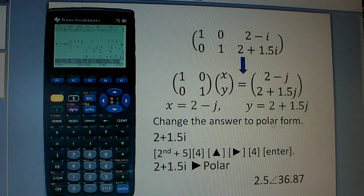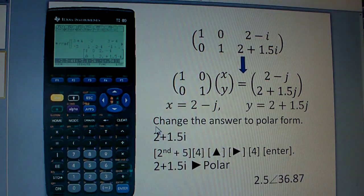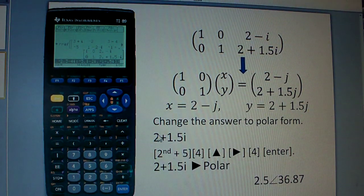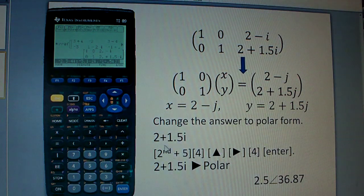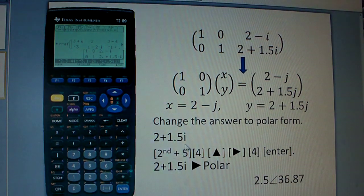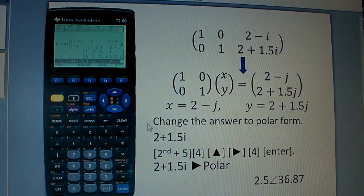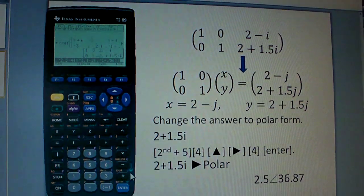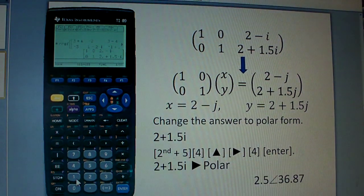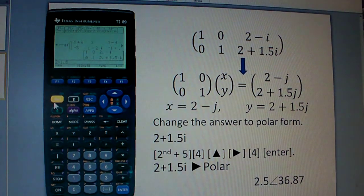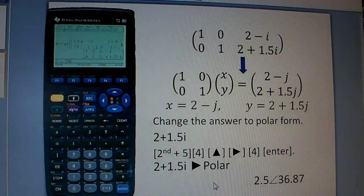And usually, when you write your answers, you want to write in polar form, and let's see how to do that in TI-89. So let's take this number, for example, 2 plus 1.5 I. That's the value of Y, and you put 2 plus 1.5 I.